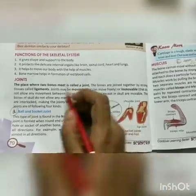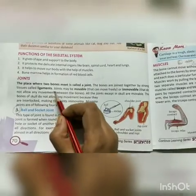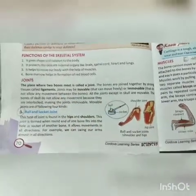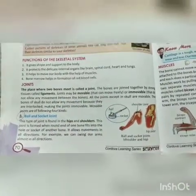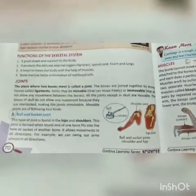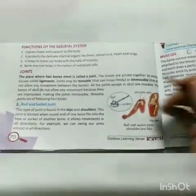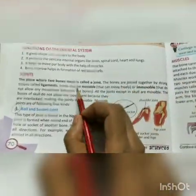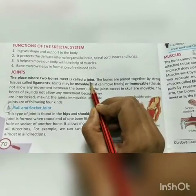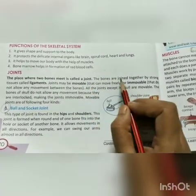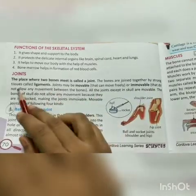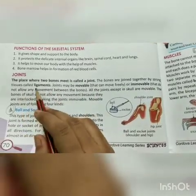Joints. The place where two bones meet is called a joint. The bones are joined together by strong tissues called ligaments.